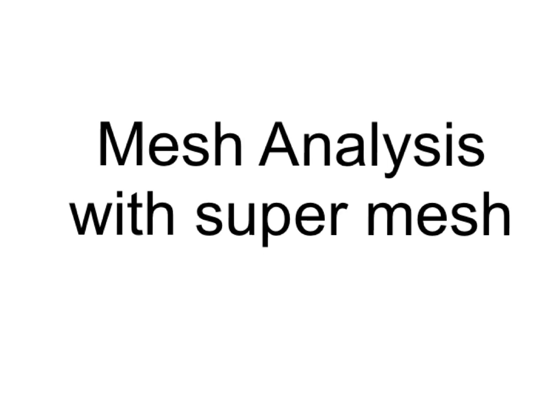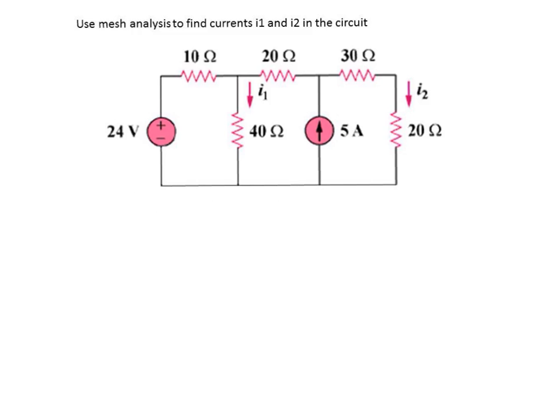Now let's talk about mesh analysis applied to a circuit with a super mesh. The question is to use mesh analysis to find currents I1 and I2 in the given circuit. The first step is to assign the mesh currents. We can see that there are three meshes, so we'll assign mesh currents I1 for the first mesh, I2 for the second mesh, and I3 for mesh number 3, all in the clockwise direction.